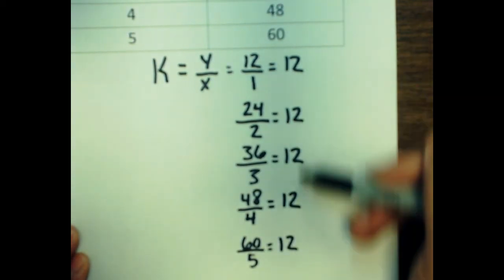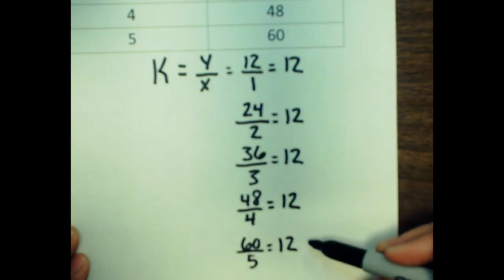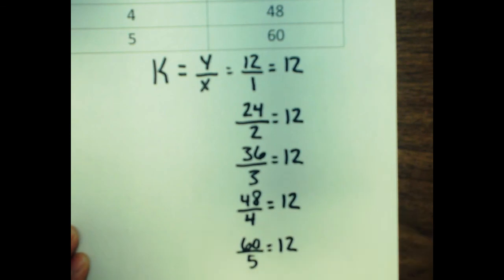Seeing that we got 12 for every ordered pair within the table, we know that we have a proportional relationship within this table. Let's take care.